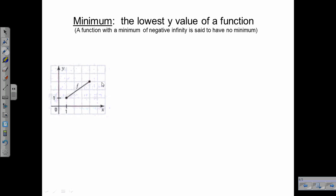Where's our lowest value? Occurs right there. What's our y coordinate? Y coordinate is one. So we just write it out: minimum of f equals one.